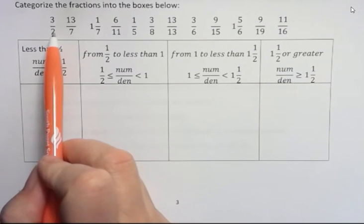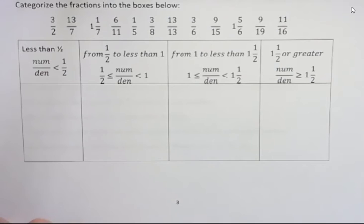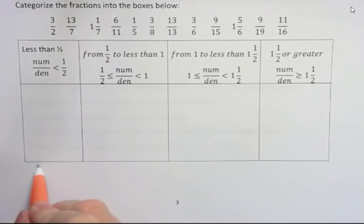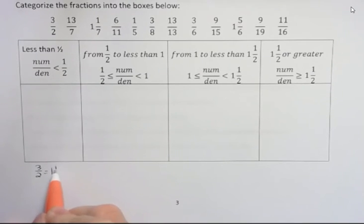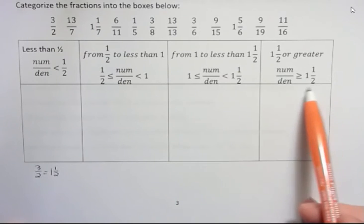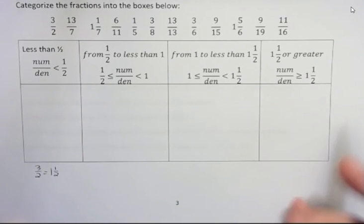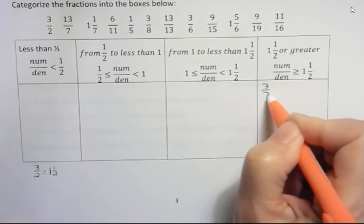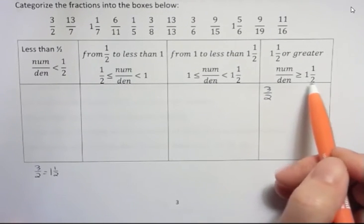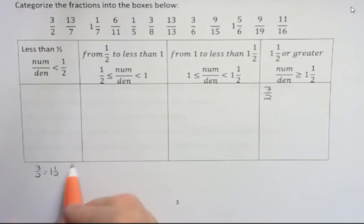Well, 3 over 2. If I change 3 over 2 into a mixed number, I get 2 goes into 3 one time with 1 left over, I get 1 and a half. So the box where it actually equals 1 and a half or more is over here. So 3 halves is exactly equal to 1 and a half. So it goes there.